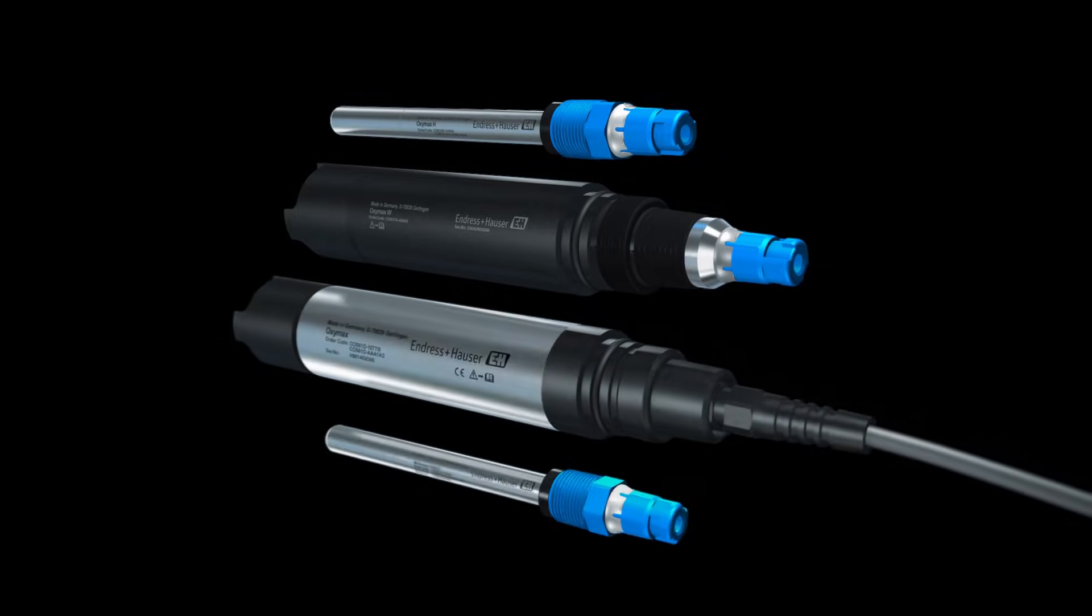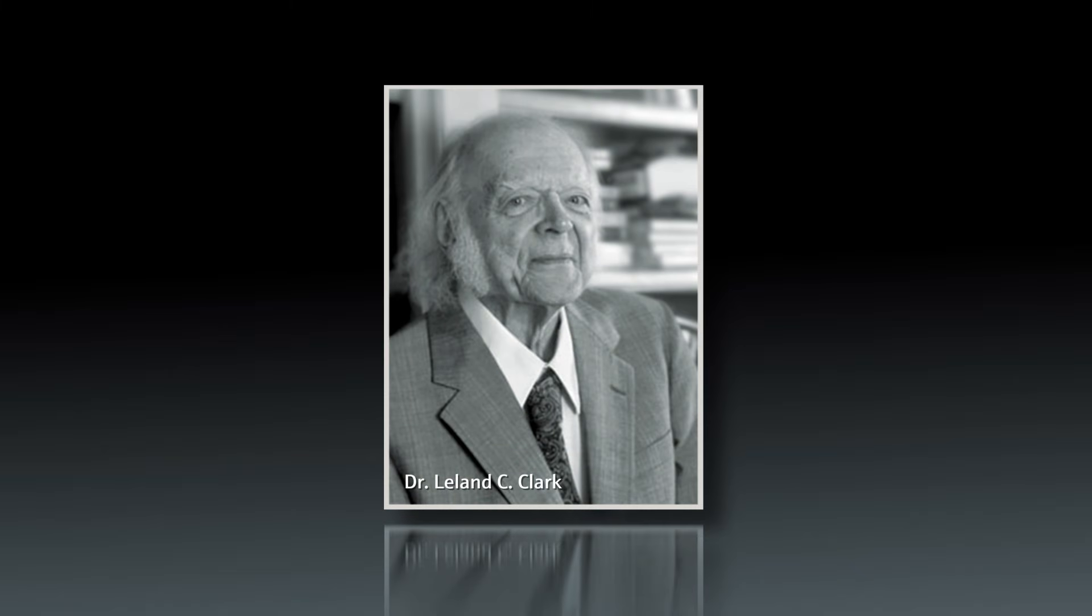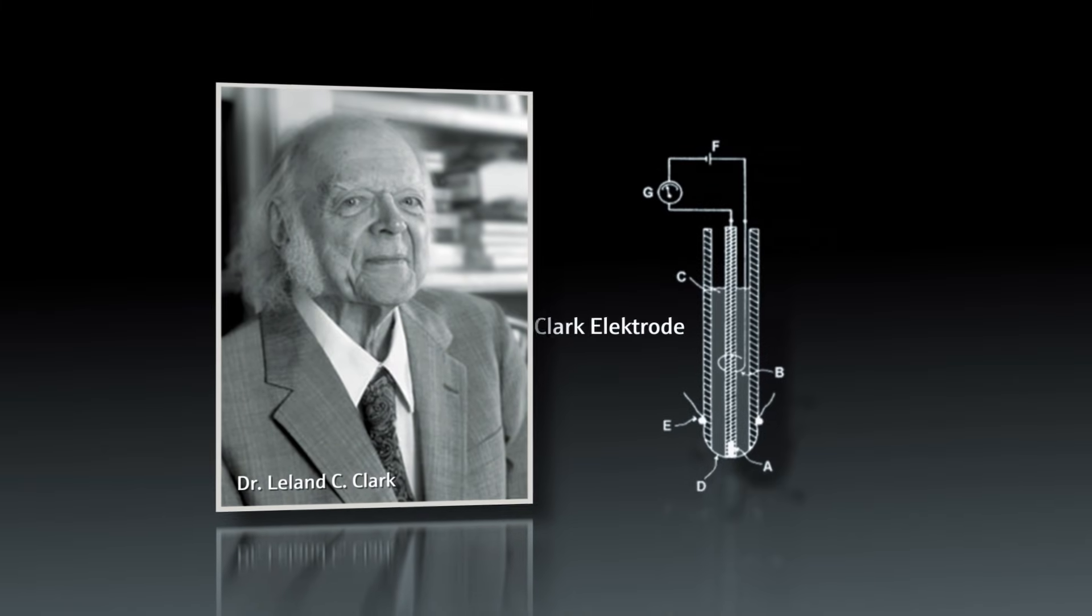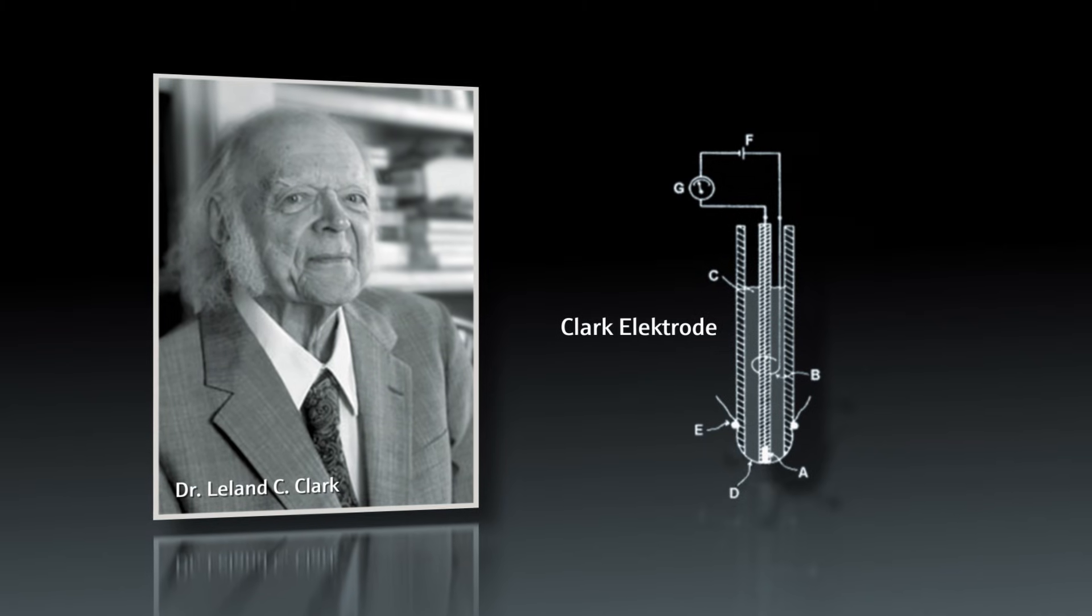Let's take a look at how the amperometric oxygen measuring principle works. In 1954, Leland C. Clark, an American biochemist, developed the so-called Clark electrode to measure the oxygen concentration in blood. This type of amperometric oxygen sensor can be used to measure the oxygen concentration in many different solutions.